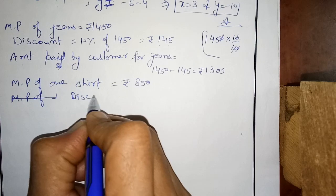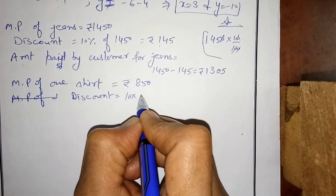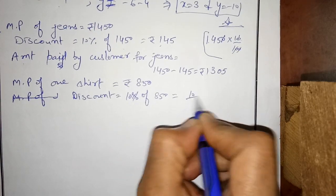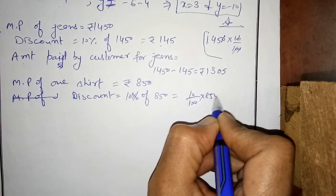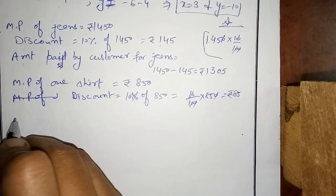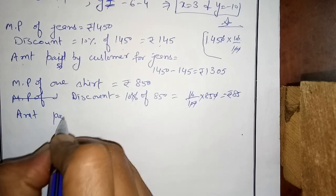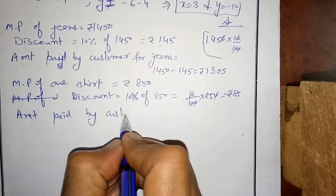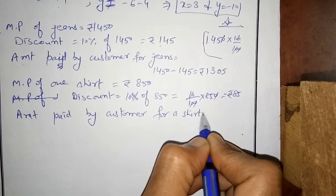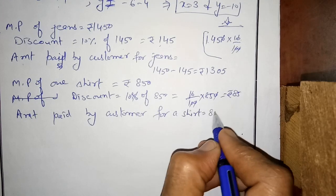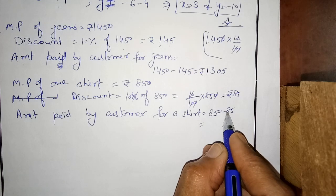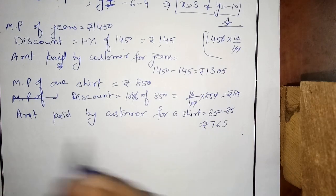Discount is 10% of Rs. 8.50, that is 10/100 multiplied by 8.50, zeros cancel, giving Rs. 0.85. Amount paid by customer for one shirt is 8.50 minus 0.85, which gives Rs. 7.65.